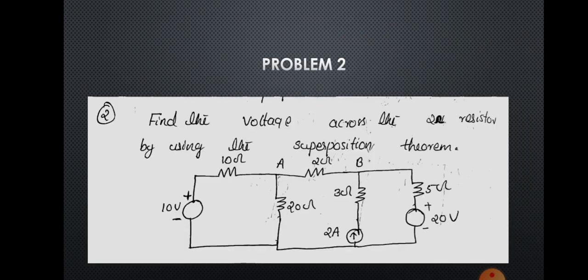Next problem: find the voltage across the 2 ohm resistor using superposition principle. The 2 ohm resistance is connected between points A and B. There are three sources: a 10 volt source, a 20 volt source, and a 2 ampere current source. You must consider the effect of each source separately. Voltage sources are replaced by short circuit and current sources by open circuit when not being considered.